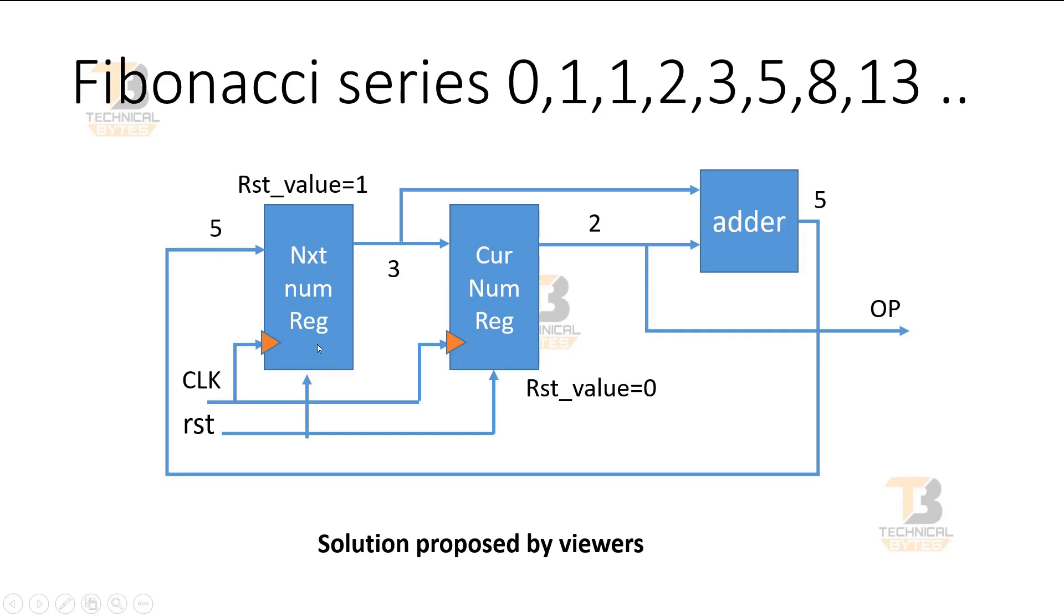Friends, let me extend this Fibonacci series when the number becomes bigger than 255, so it is 377. When the adder will give 377, these registers will not be able to hold this value. Maybe they will consider the LSB bits and then your entire design after that will malfunction.